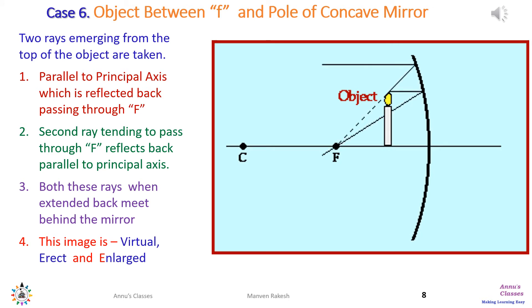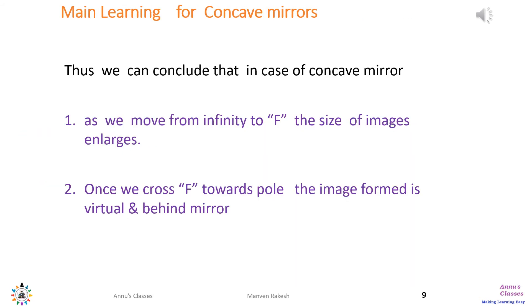Case 6 is the most typical case for the concave mirror. This is the only case where the image forms behind the mirror. Rays first travel to the mirror and then pass through either parallel to principal axis or focal point. Since they are not meeting in front of the mirror, they are extended back and meet behind the mirror, forming an erect, virtual and enlarged image.